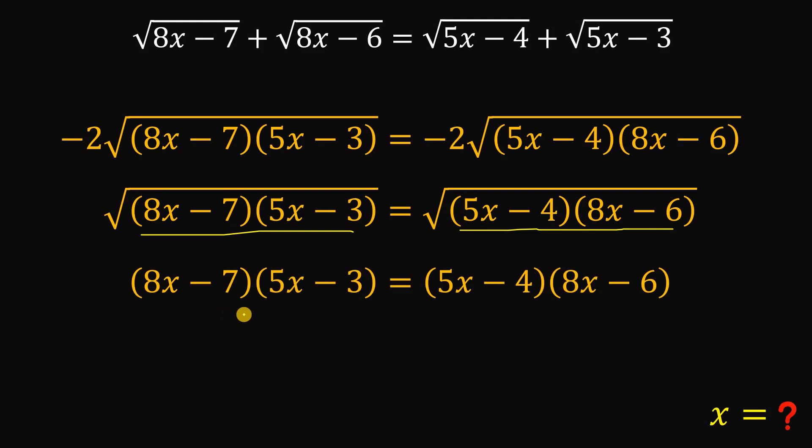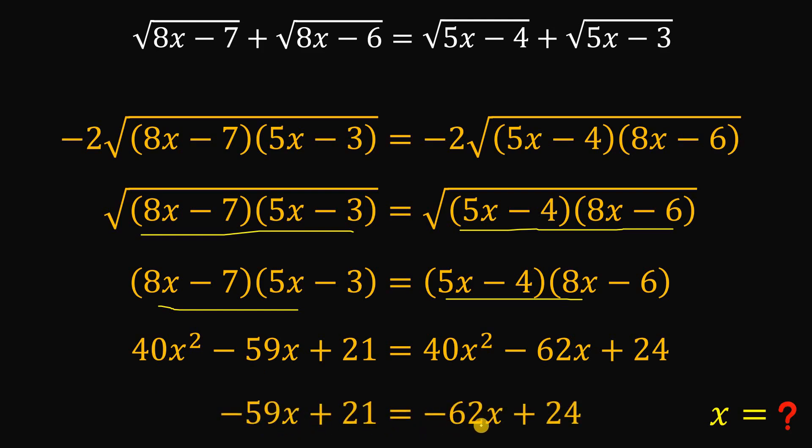And now, let's multiply these two factors. And if we do that, we get 40x squared minus 59x plus 21. On the right-hand side, we have 40x squared minus 62x plus 24. And we have the same 40x squared term. So if we subtract 40x squared term, we get this equal to 0. So this is just negative 59x plus 21 equals negative 62x plus 24.